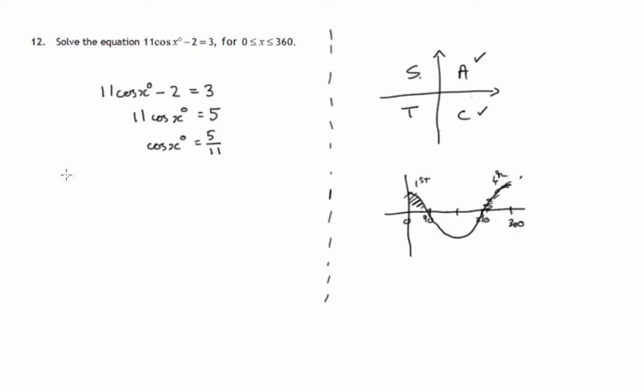So let's write this down. Cosine x is positive in the first and fourth quadrants. So first quadrant angle, let's work out that first. We're looking for an angle whose cosine is 5 11ths.